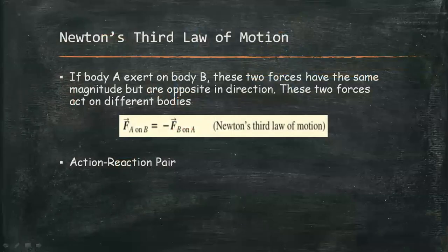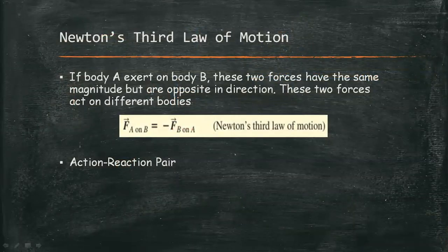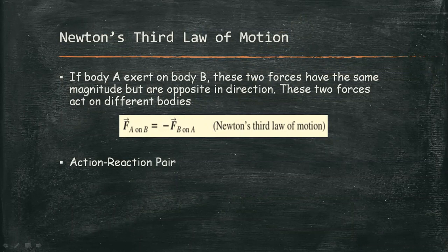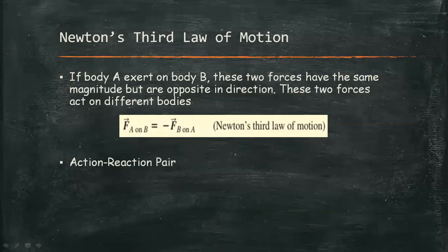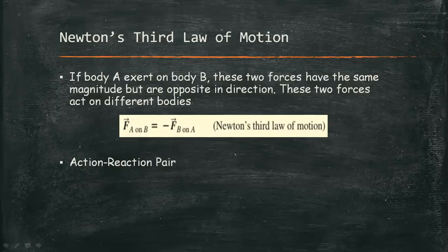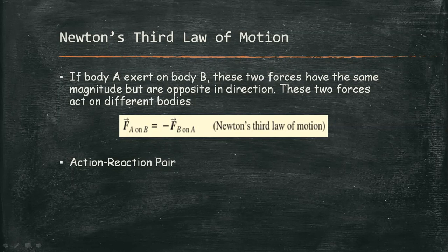Thus, Newton's third law of motion states that if body A exerts on body B an action, then body B exerts a force on body A, a reaction. These two forces have the same magnitude but are opposite in direction. These two forces act on different bodies.